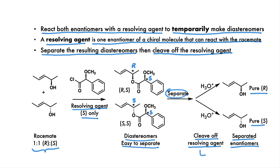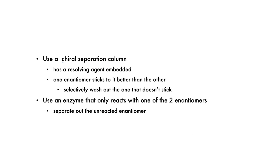Many resolving agents can be recycled and reused to resolve other enantiomers from each other. There are also other ways to separate enantiomers. For instance, you can put the racemic mixture onto a chiral separation column. The chiral column would have a resolving agent embedded in it. Ideally, one enantiomer of the racemate sticks to the column better than the other, and you would selectively wash out the one that doesn't stick.